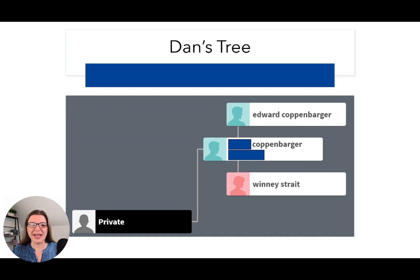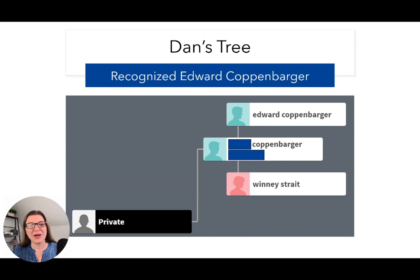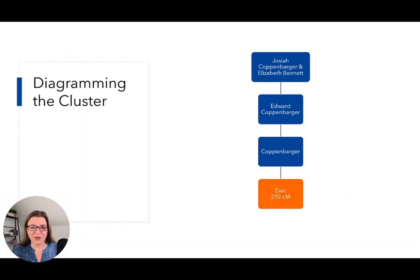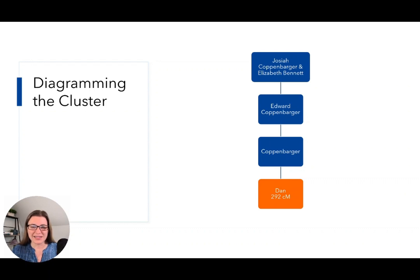Here's Dan's tree. It's very simple — it's him, then his father, then his paternal grandparents. I recognize Edward Koppenbarger — you probably recognize that Koppenbarger surname. To start with this match, I'm not going to just add this to my tree. I'm going to do traditional genealogy and make sure all of this makes sense. Then I'm going to do what I call diagram the cluster, starting with how Dan is related to my dad's part of the family. Dan is a great-grandson of Josiah Koppenbarger and Elizabeth Bennett, and I've added the path through Edward and then through a child and then to Dan.